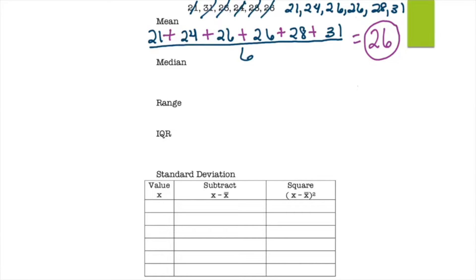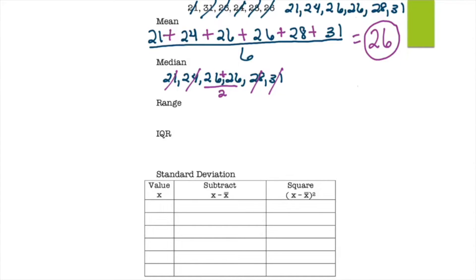For the median, list in order from least to greatest and find the middle value. Using the cross-out method — crossing one from the left, then the right — we're left with two numbers in the middle. Since there are two in the middle, find the average: 26 plus 26 is 52, divided by 2 is 26. The median is 26.